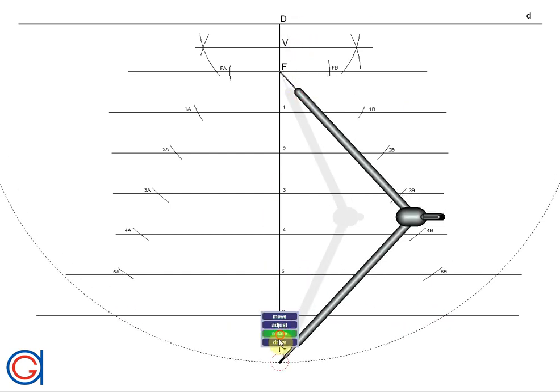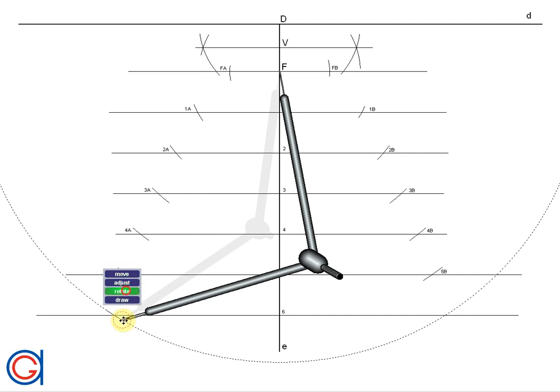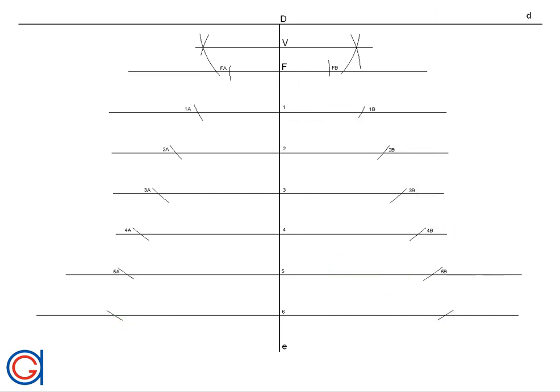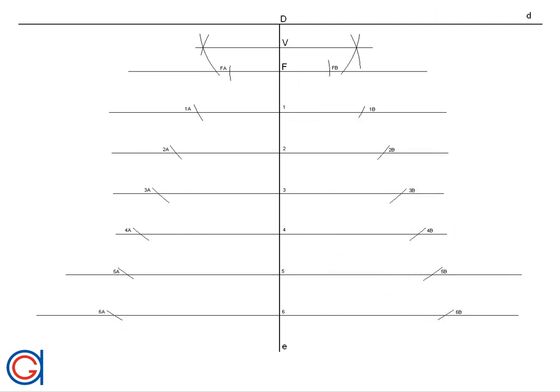So now we have all the points that we need to draw our parabola. So the next step is to join all the points to complete the parabola. We can do this freehand or using a French curve ruler to help us, making sure the parabola is tangential to the horizontal line at vertex V.